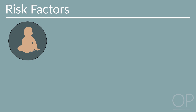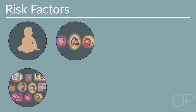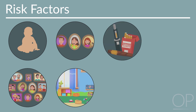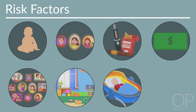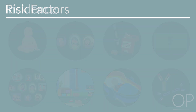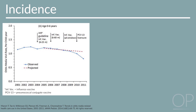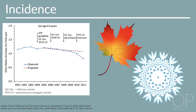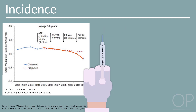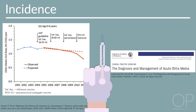Besides young age, other risk factors include family history, presence of siblings, daycare attendance, tobacco smoke, bottle propping, lower socioeconomic status, and underlying immunodeficiency. While the incidence of acute otitis media is increased during the fall and winter, the overall incidence has decreased over time with the introduction of pneumococcal conjugate vaccine and more stringent diagnosis guidelines.